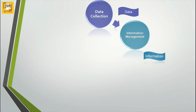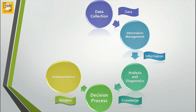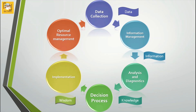To simplify this process, here is a flowchart: first is data collection, then the data is stored in an information management system. The information obtained is analyzed and diagnosed, and the knowledge gained is used in the decision-making process. This gives us the wisdom of the data, which is implemented to optimize the resource management system of the field.